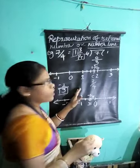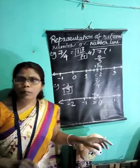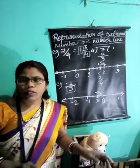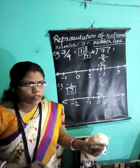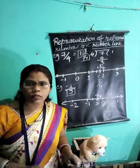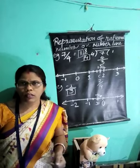Okay children, thus you are going to represent rational numbers on a number line. Now you can complete the questions of your exercise 1.2. Further, we will see in the next class.